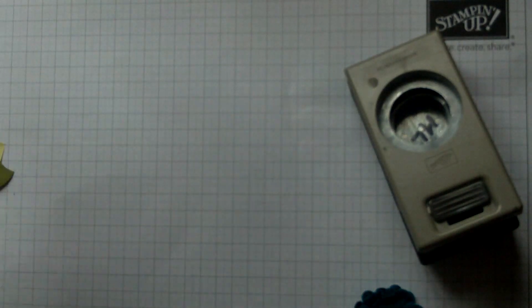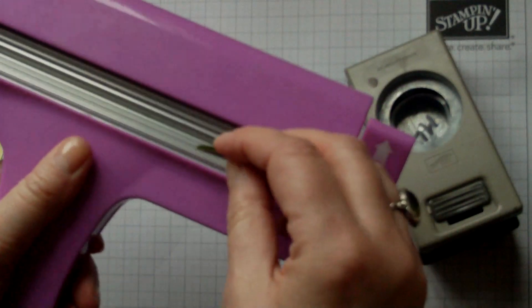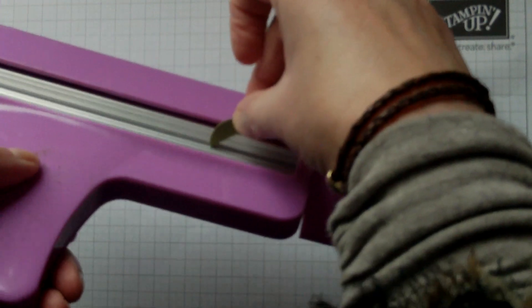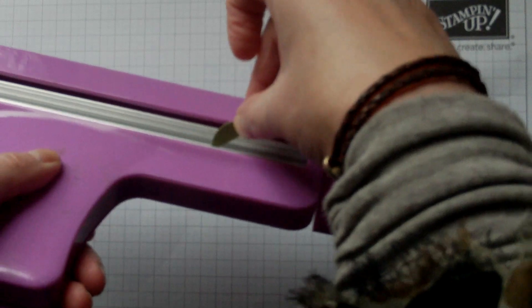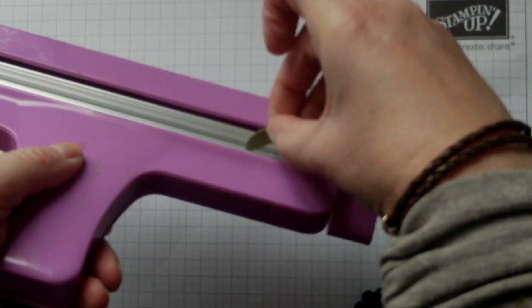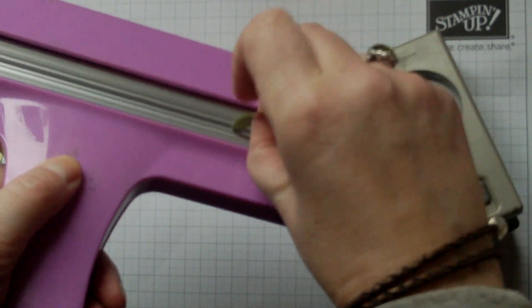Then you need a crimper and you need to feed it through the crimper at an angle, at a 45 degree angle. Can you see that? You don't want to feed it through like that or flat like that. You want to feed it through so that it's at a 45 degree angle.